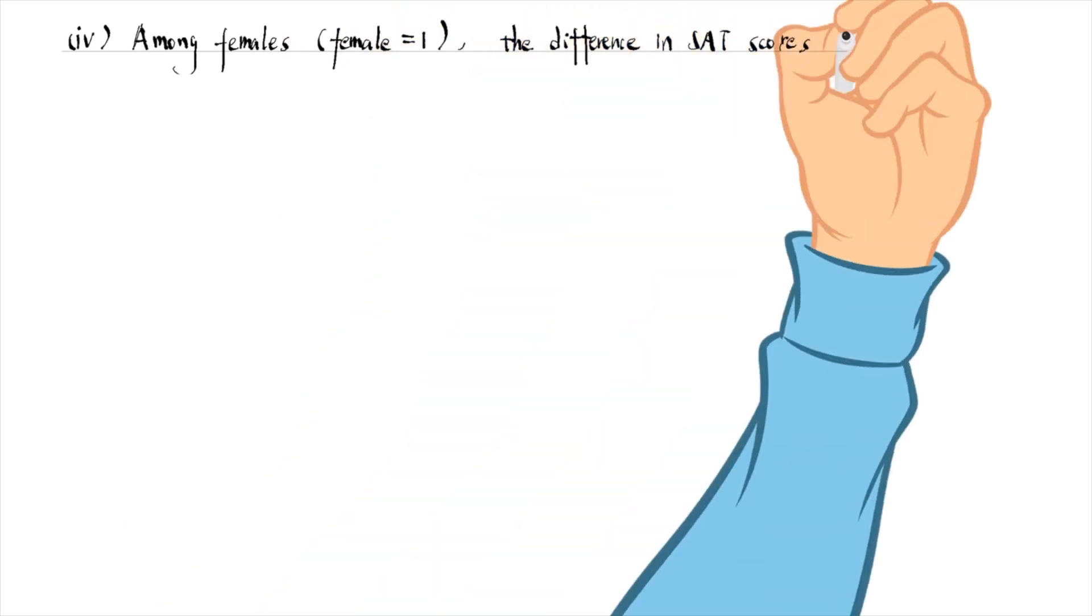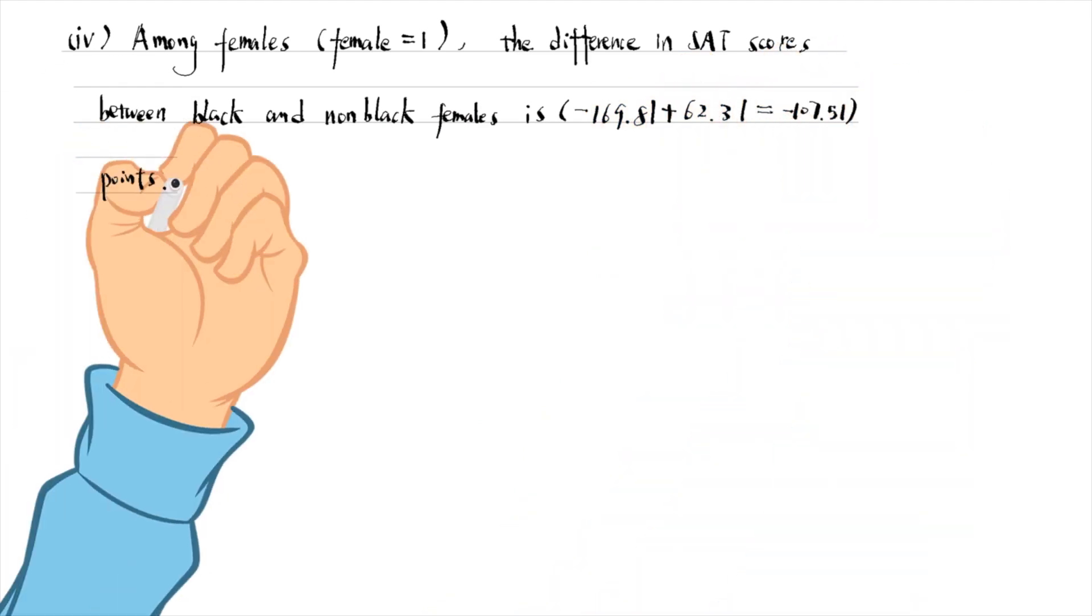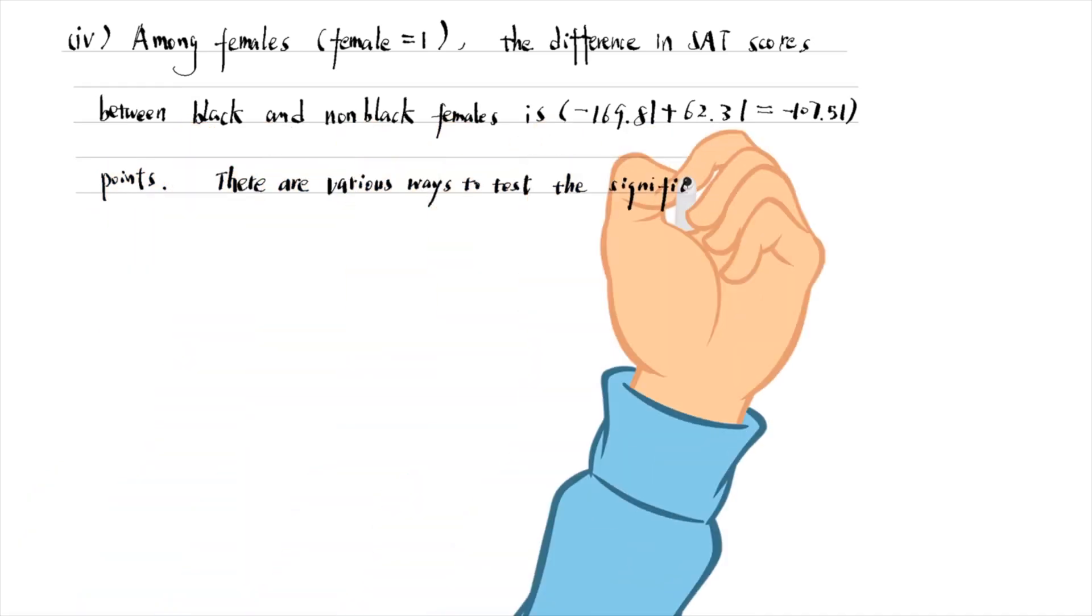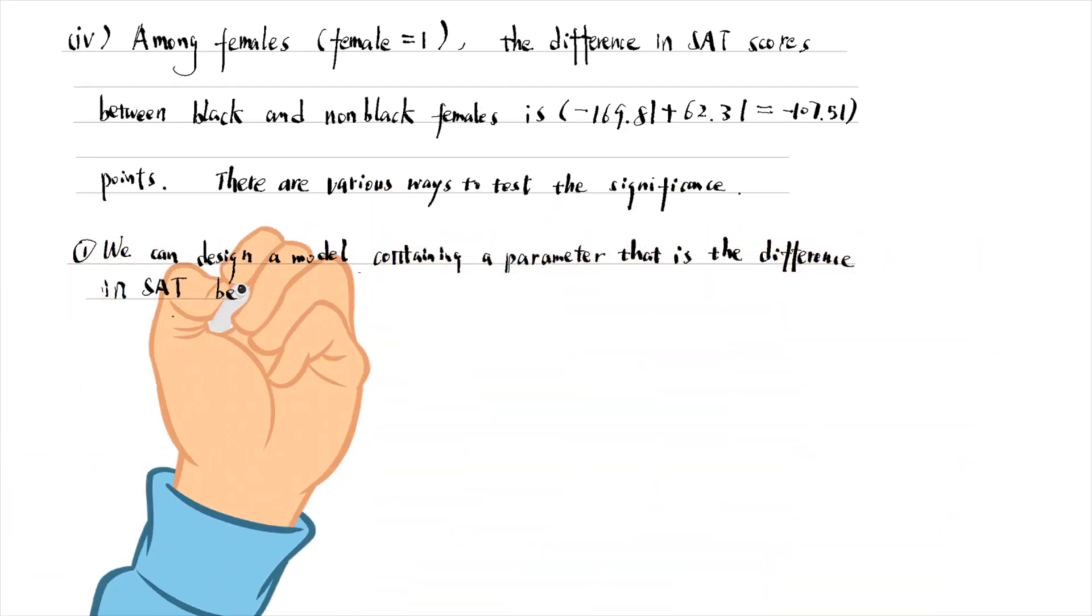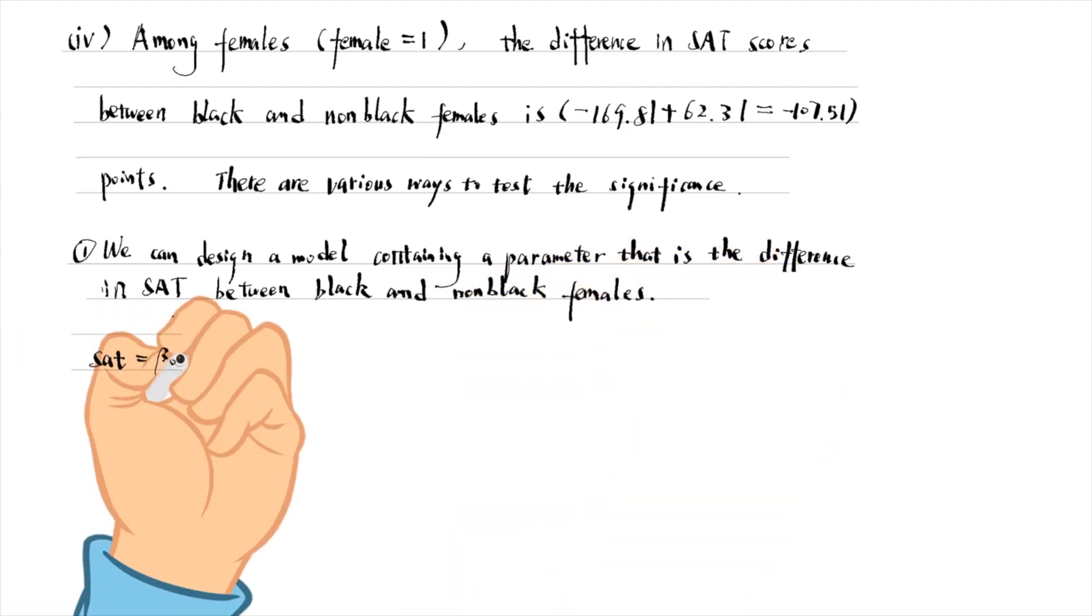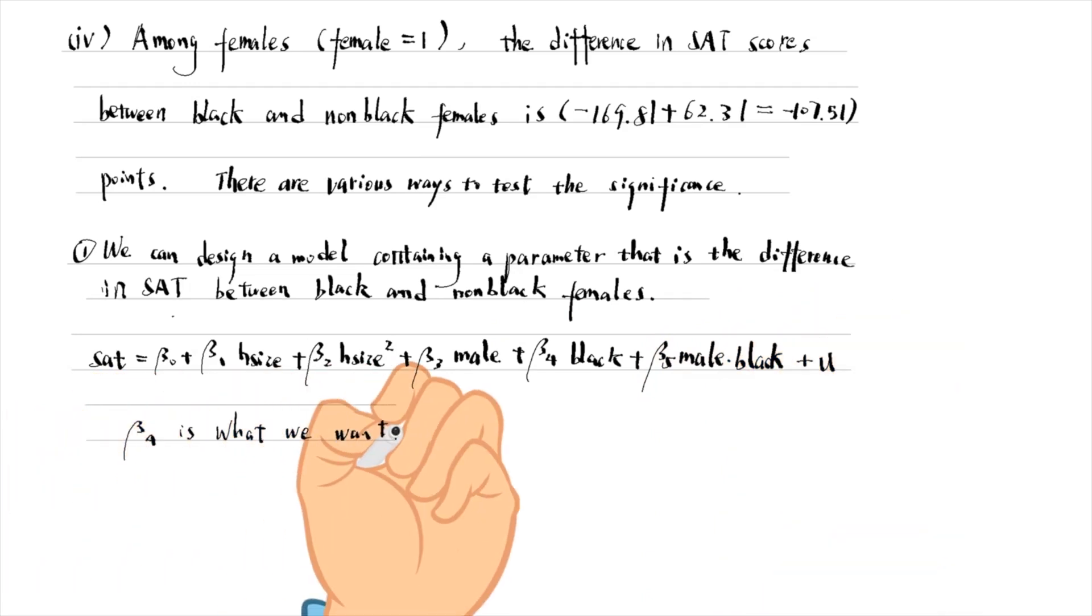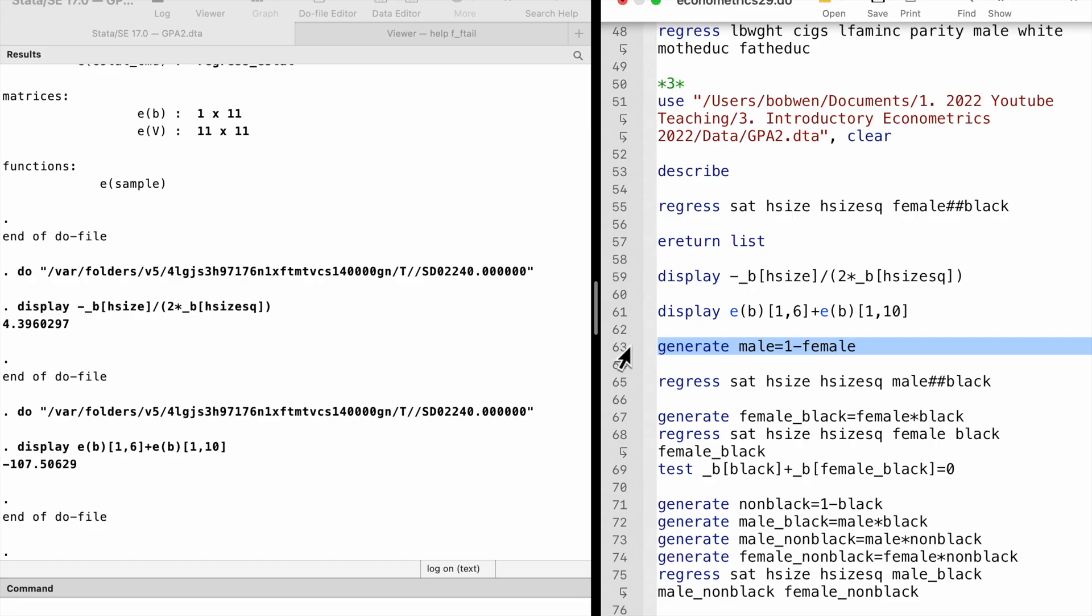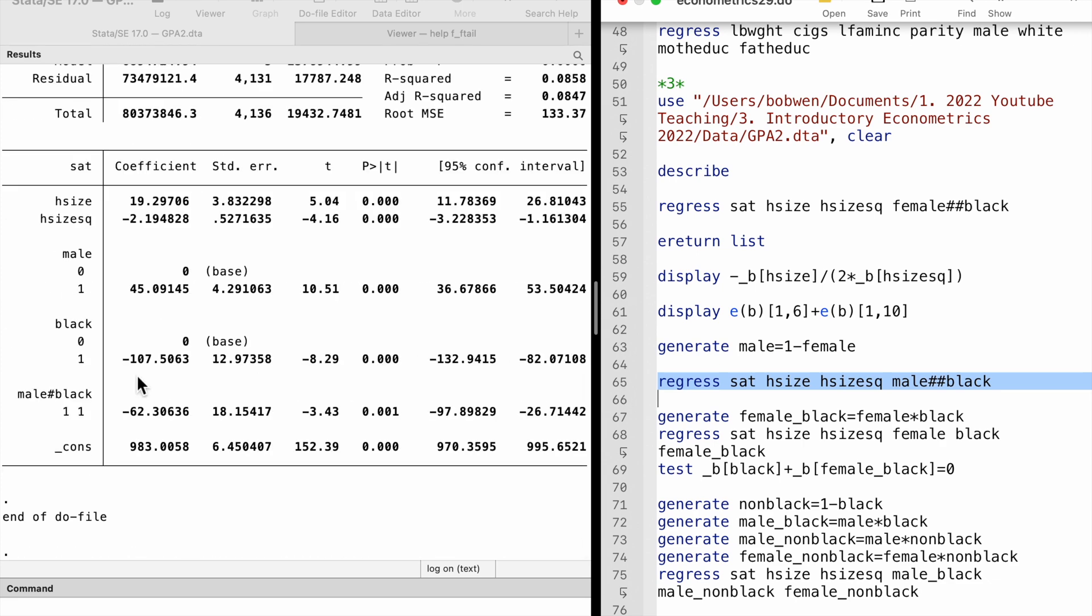For the last part, among the females, the difference in SAT scores between black and non-black females is minus 107.5 points. There are various ways to test its significance. We can design a model containing a parameter that is the difference in SAT between black and non-black females. Beta 4 is what we want. We can read its standard error, t-statistic, and p-value from the Stata result window. The regression shows that the t-statistic is minus 8.29 and the p-value is zero to three decimal places. The difference is statistically significant at any reasonable level.